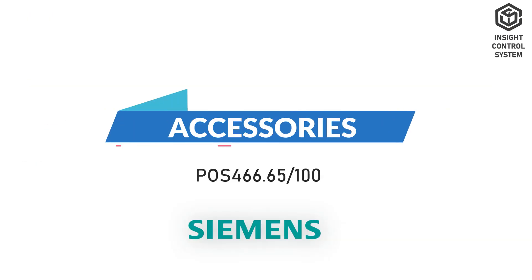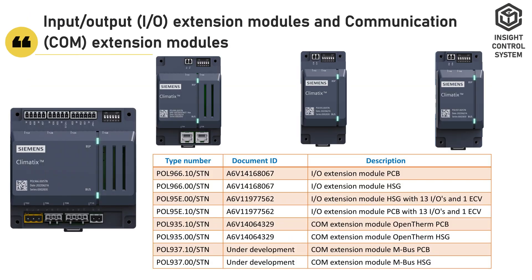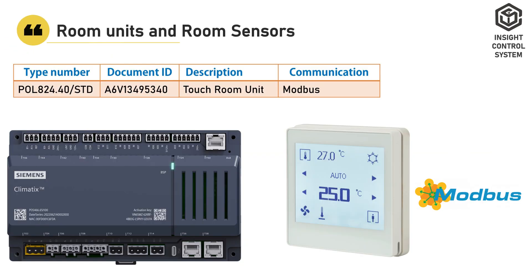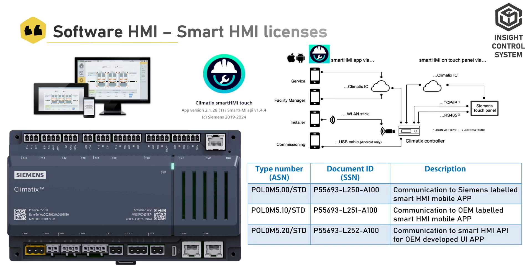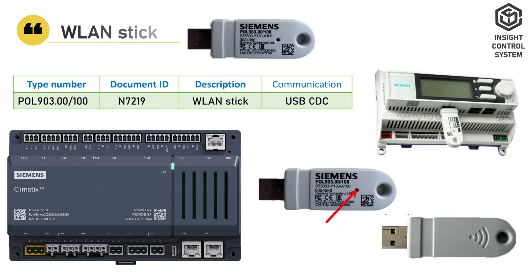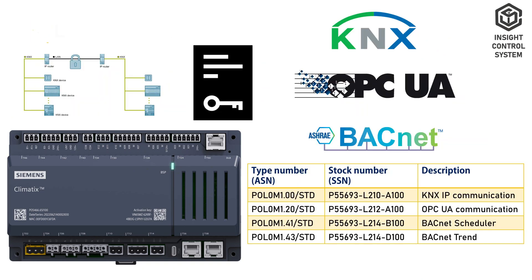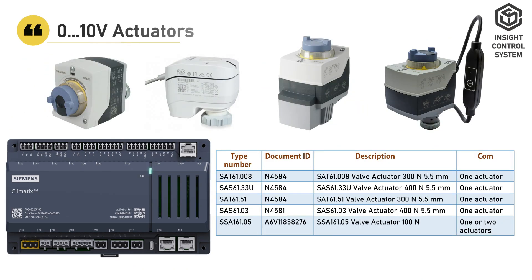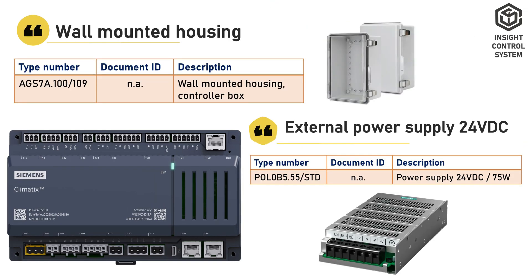Accessories include: Input-Output extension modules and communication extension modules, room units and room sensors, cabinet touch HMI displays, software HMI for Smart HMI licenses, WLAN stick, cloud services for Ethernet IP, licenses, 0–10 volt valve actuators, temperature sensors, wall mounted housing, and 24 volt DC external power supply.